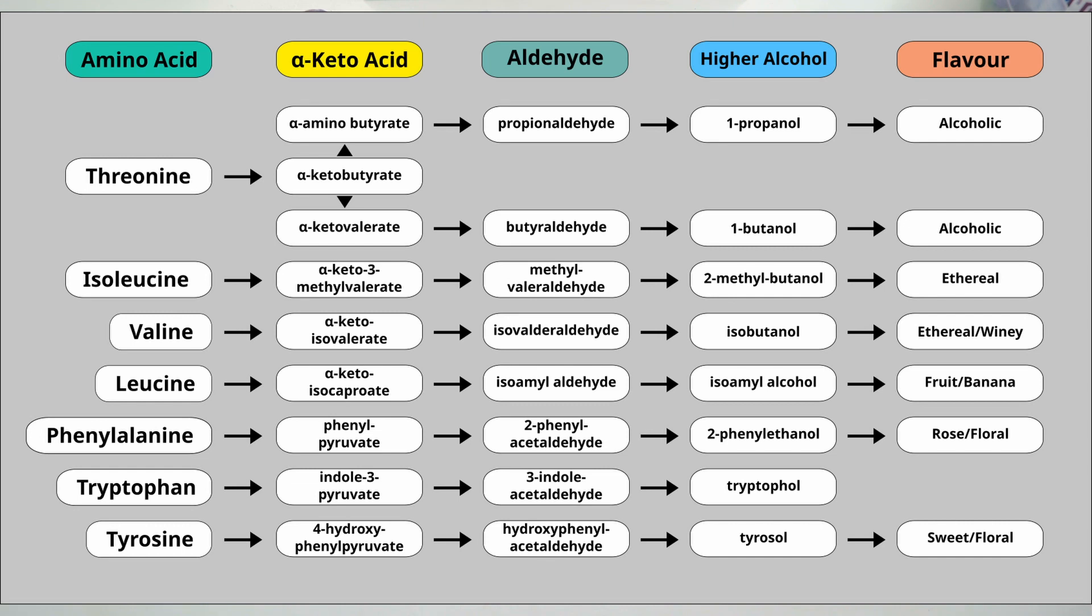The next one is isoleucine. It gets turned into alpha-keto-3-methylvalorate, then methylvaloraldehyde, then 2-methylbutanol. This was described as having an ethereal flavor and odor. I don't know what that means. To me ethereal means sort of wispy, not very pronounced or something. Maybe there's some other meaning I just don't know.